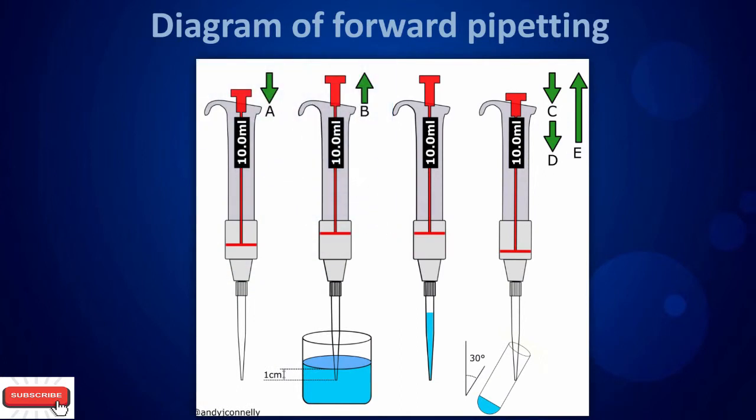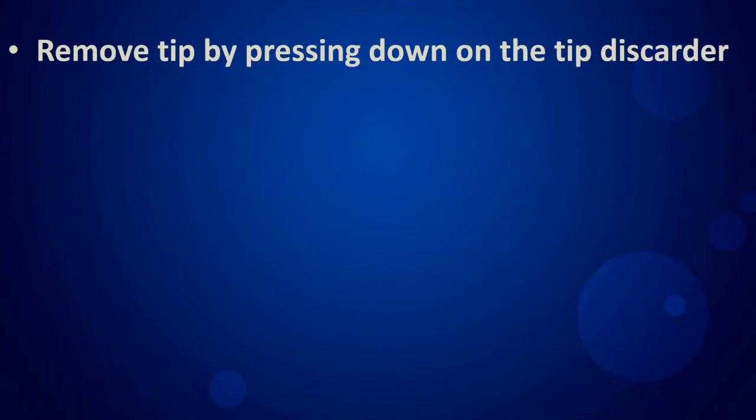Diagram of forward pipetting. Remove tip by pressing down on the tip discarder.